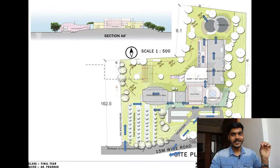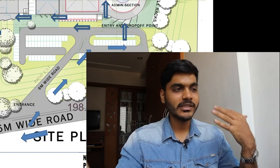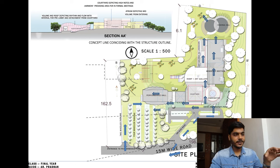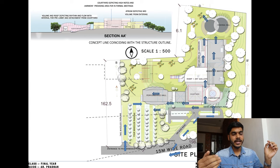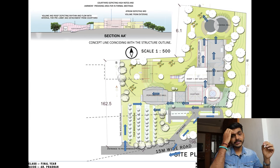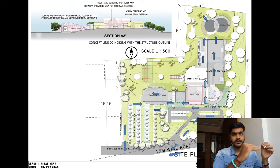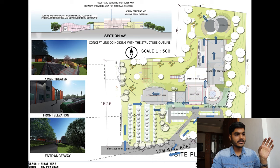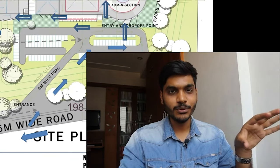I did this during the pandemic so everything is in PPT animation — otherwise architects don't get to present in PPT. Section AA goes through the performance center, the void, and admin section. In the auditorium, the volume of the roof is depicted by rhythm and flow, with the interval of the pre-lobby detached from the code. I used the concept line in this section — the quarter depicts high notes, the perceiving line goes up and out, and the atrium depicts the mid notes, while the low notes are depicted at the bottom.